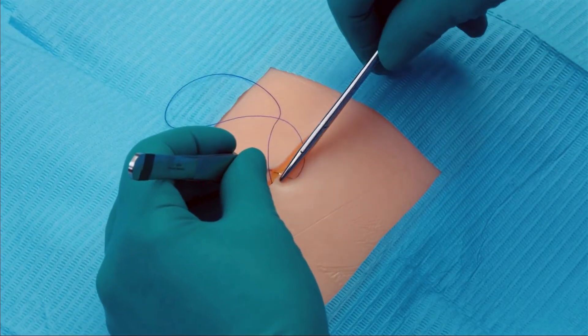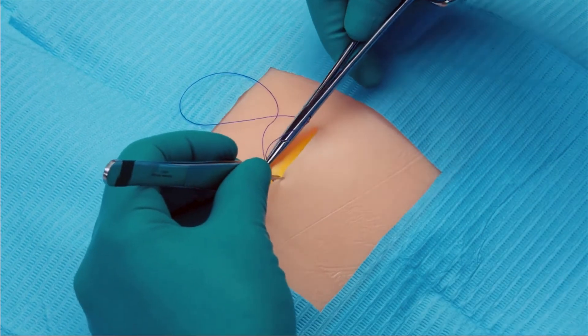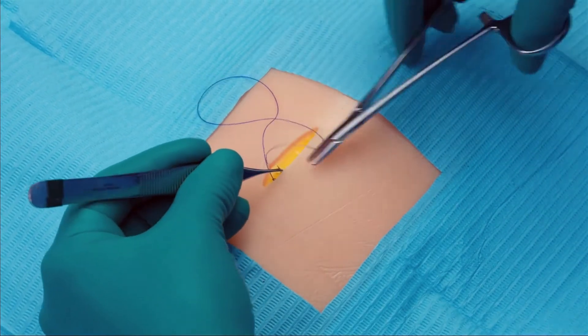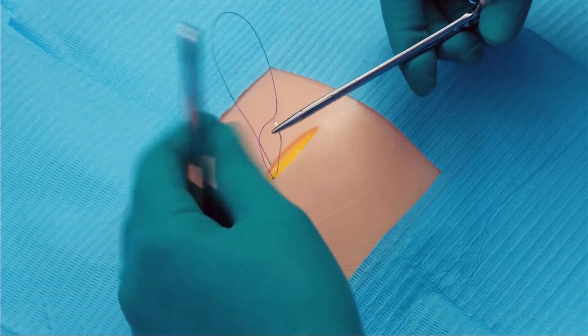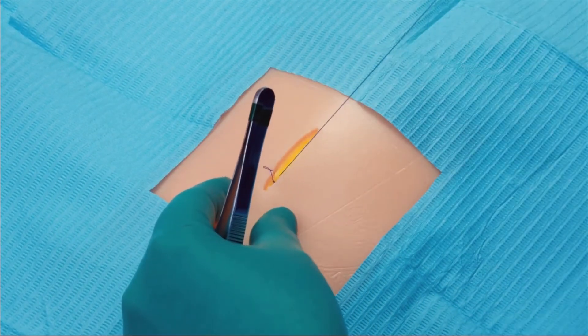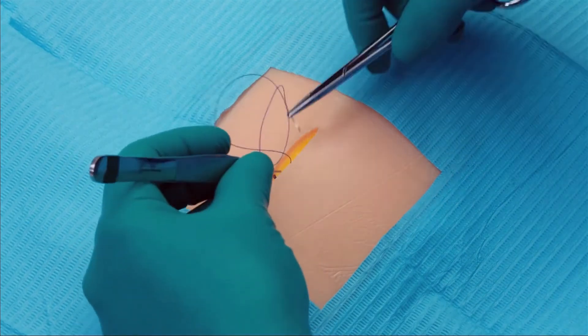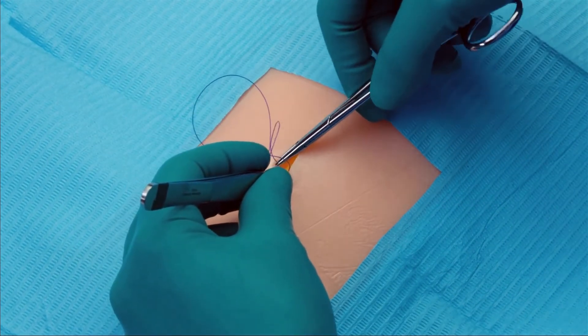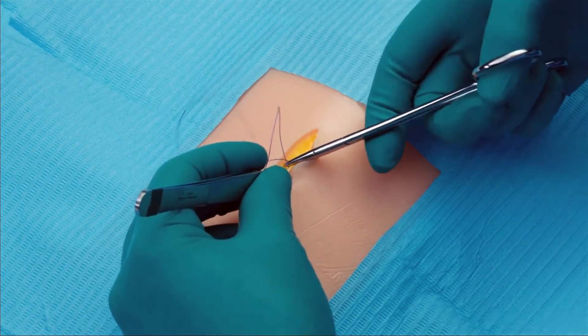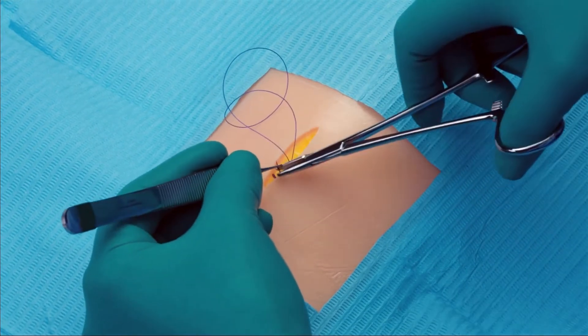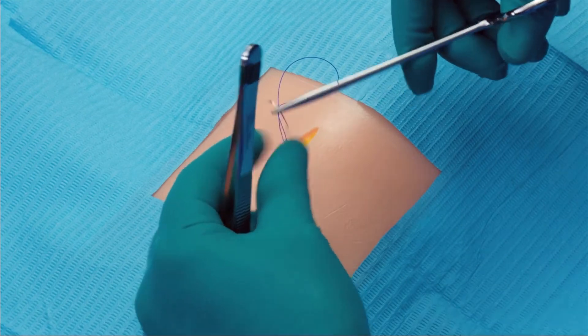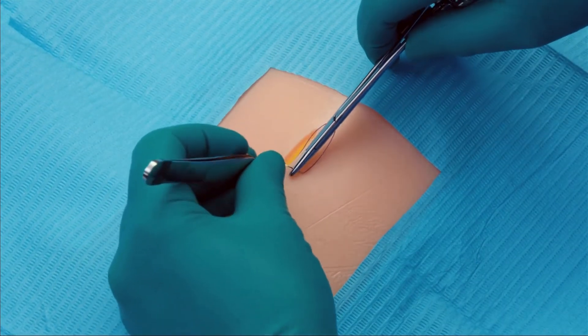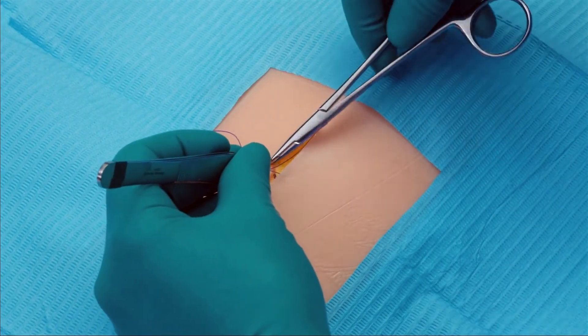Then, we take at least two loose bites of the tissue to be approximated in a simple, continuous fashion. Now, the device can be grasped, and the tissue can be approximated to the desired tension. This helps anchor the quill device and ensures even distribution of tension.